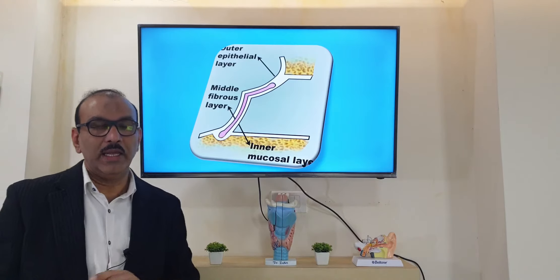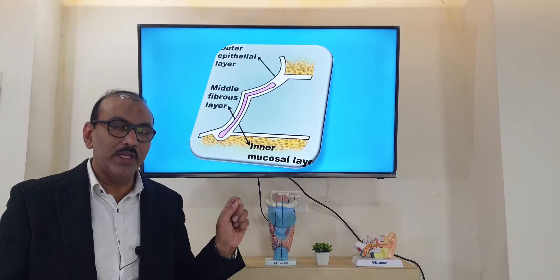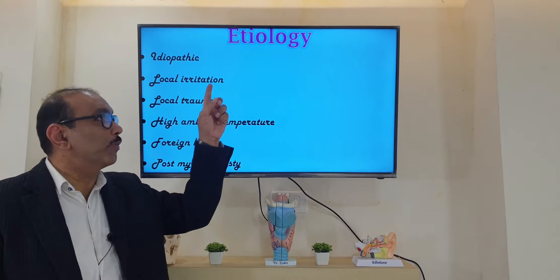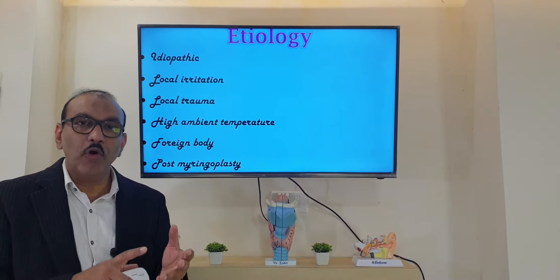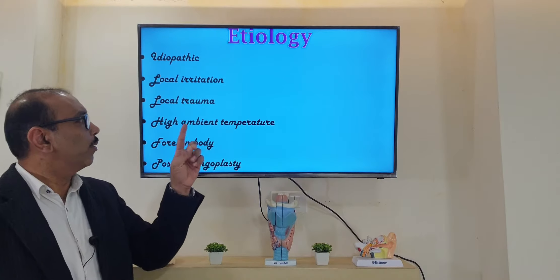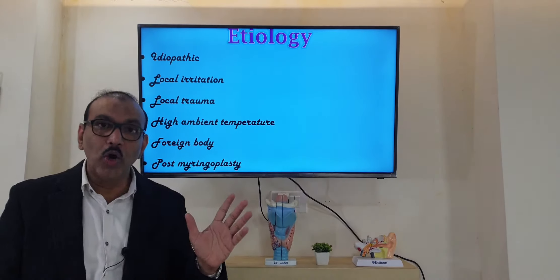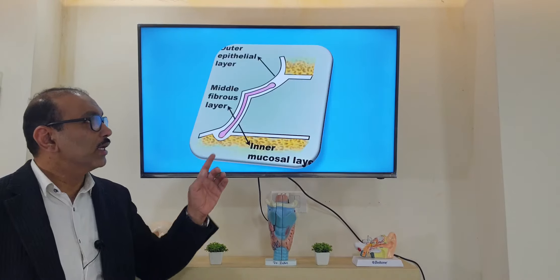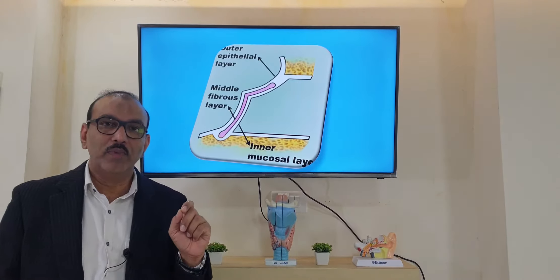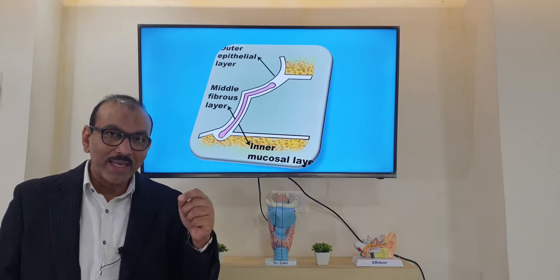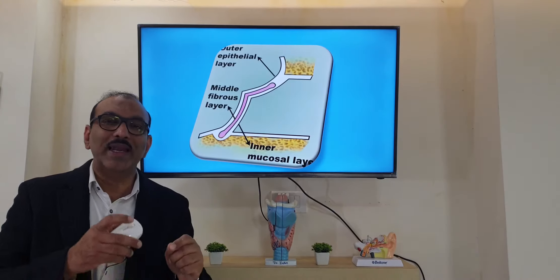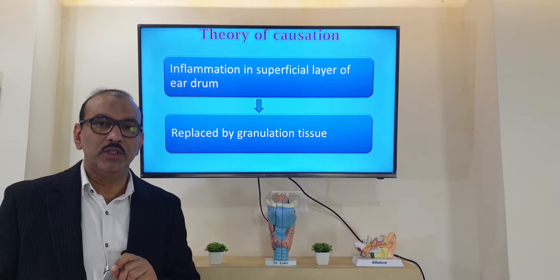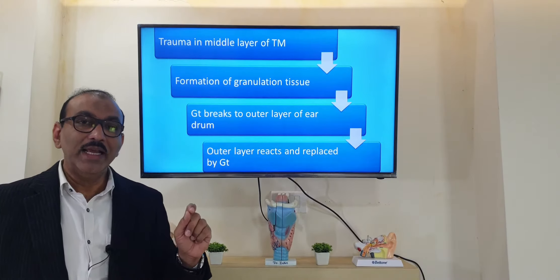This tympanic membrane has three layers: outer, middle, and inner. In granular myringitis, due to any of several causes — which can be idiopathic, or due to local irritation, foreign body, local trauma, or post-surgical causes — there will be irritation of the outer layer of the eardrum. When irritated, it reacts by forming granulation tissue. This is the first theory, where the problem starts in the outer layer.